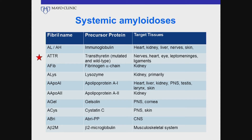Those tissues can be the heart, the kidney, the liver, the nerves, etc. There is a little red star where you can see the ATTR, or transthyretin amyloidosis. That comes in two forms: one is an age-related form, and the other is an inherited or familial or mutated form, and that's going to be our focus.